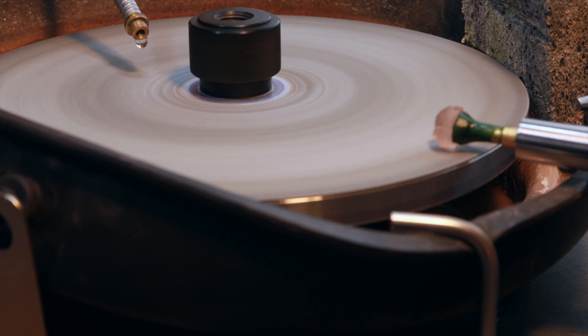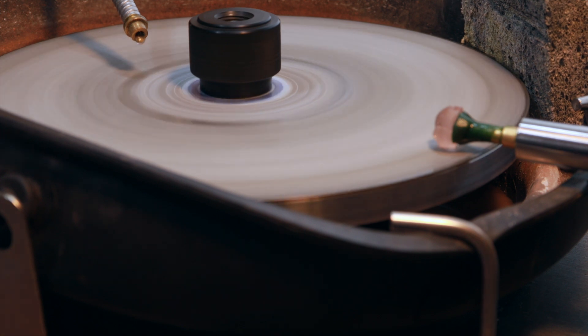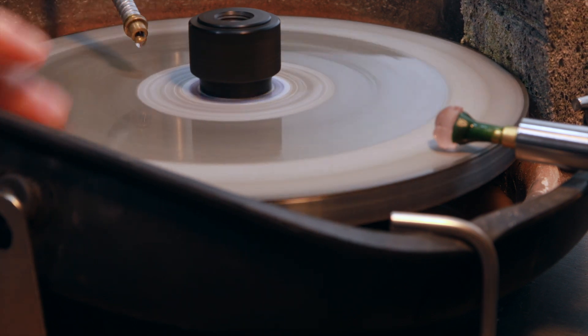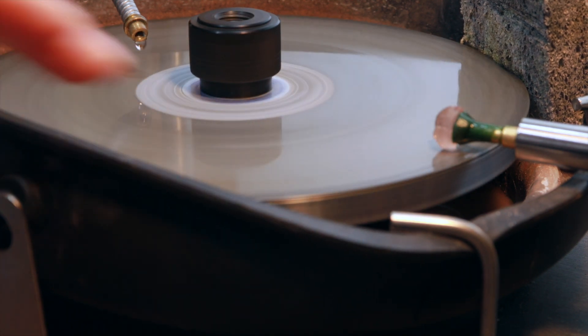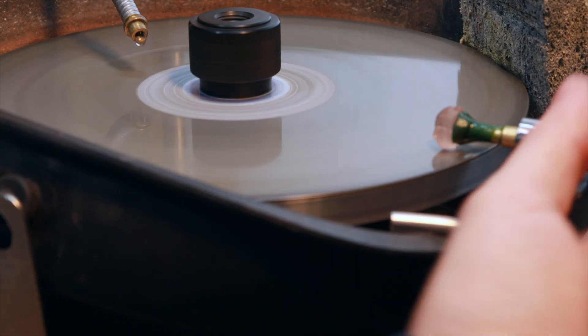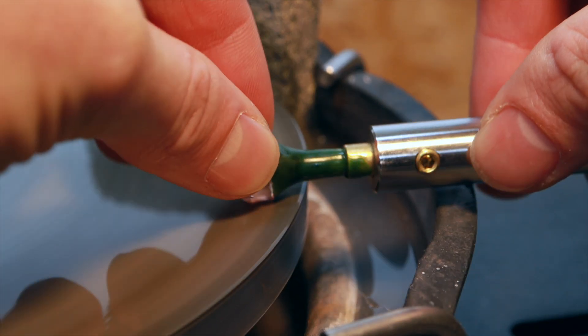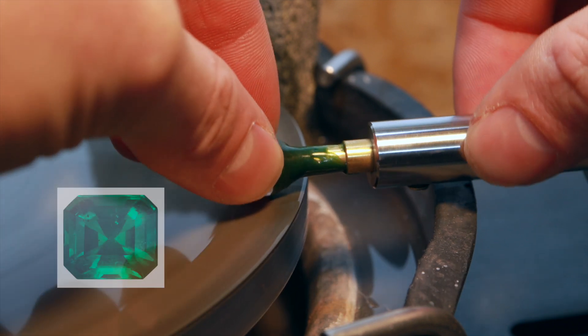It's now time to start cutting the stone. The first thing I'm going to do is round out the girdle. Morganite is a member of the beryl gemstone family. Other gemstones in the beryl family include aquamarine and emerald.